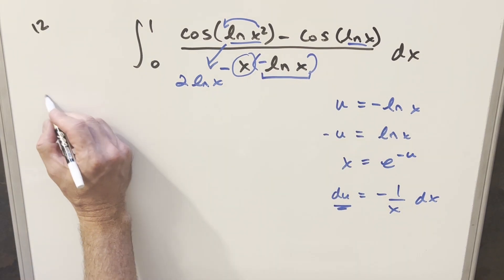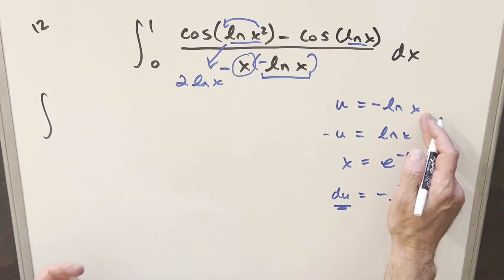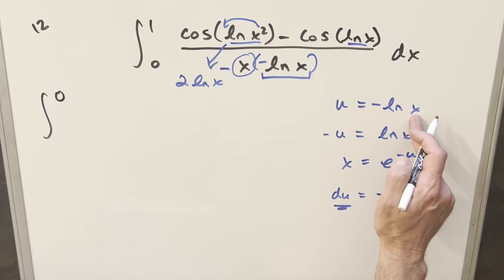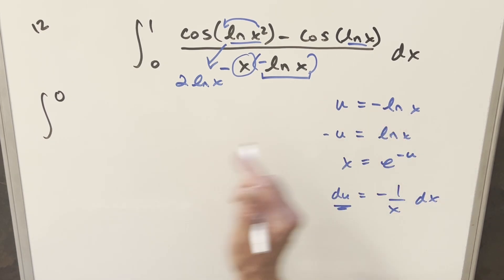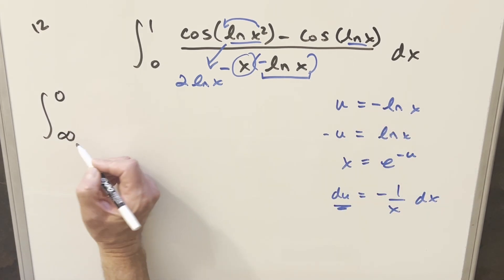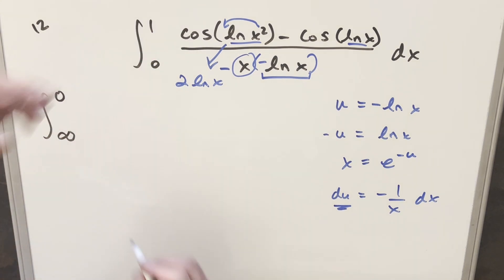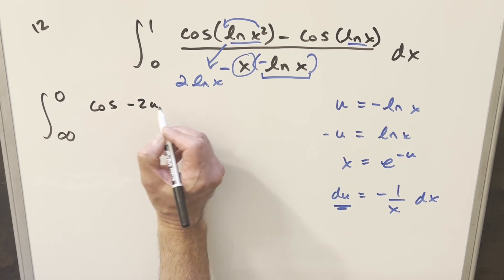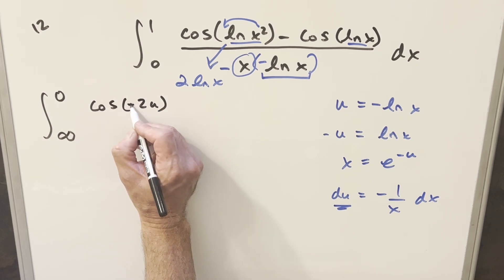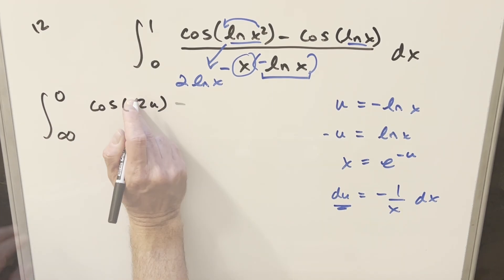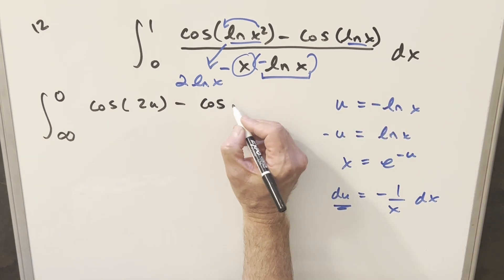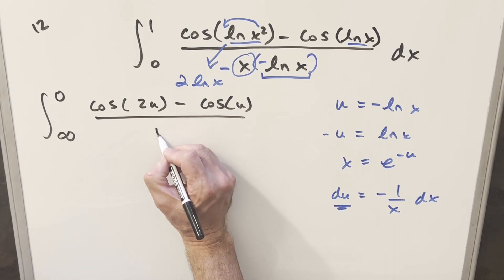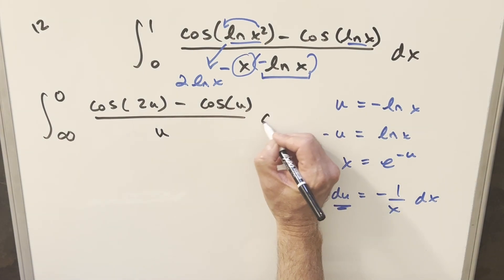Going ahead with the substitution, first we'll update our bounds: plugging in 1 gives natural log of 1, which is 0 — that's our upper bound. Plugging in 0, natural log of 0 is minus infinity, times minus, making this positive infinity. For the first term, this becomes cosine of minus 2u, but cosine is an even function so we change that to cosine 2u. Same for the second term. And minus ln x is just u, with everything else becoming our du.